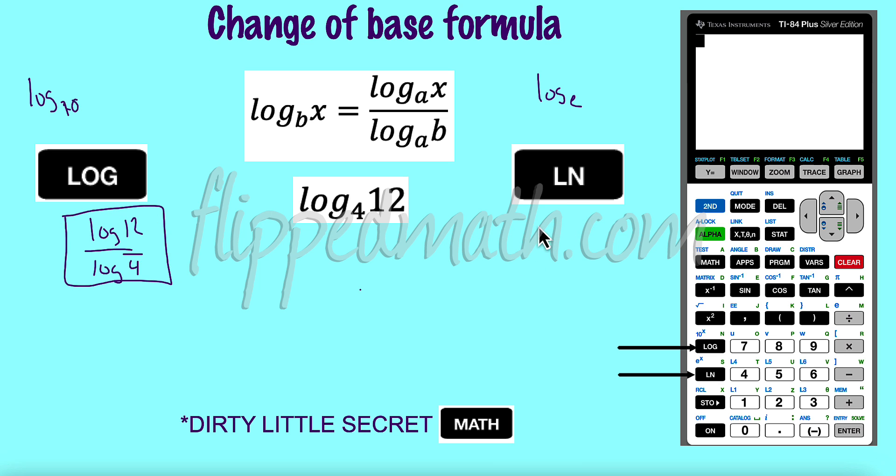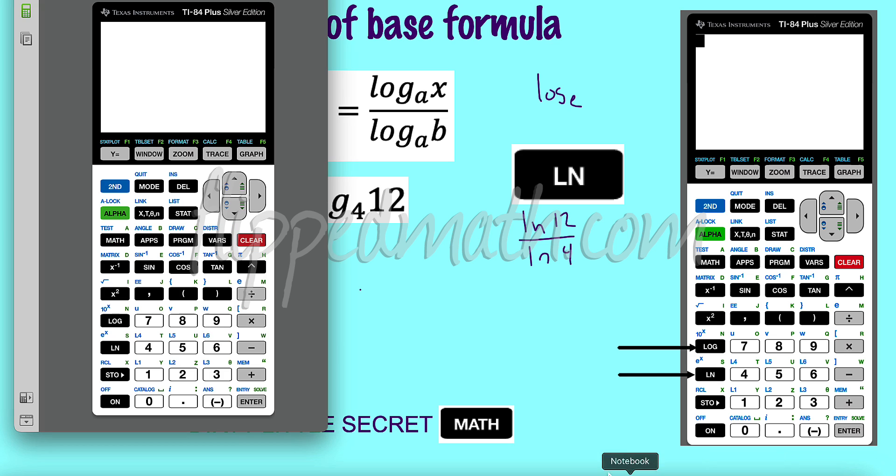Same works here. I would do the natural log of 12 over the natural log of 4. And for all you're not sure, those two things are going to be the same when you divide it out. Log base 12 divided by log base 4, or excuse me, log of 4. That gives us 1.79. If I did natural log of 12 and divided it by the natural log of 4, it's going to give me the same thing. Boom.